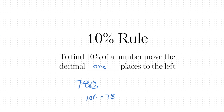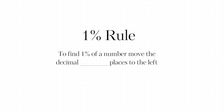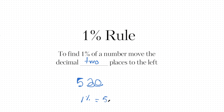That really divides by 10, so 10% of 780 equals 78. Now, to find 1% of a number it's very similar, but this time you move the decimal two places to the left. So if we have the number 520 and I want to get 1% of it, the decimal is at the end and I move it over two spots to the left — one and two — so 1% equals 5.2.